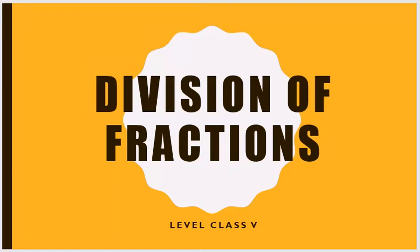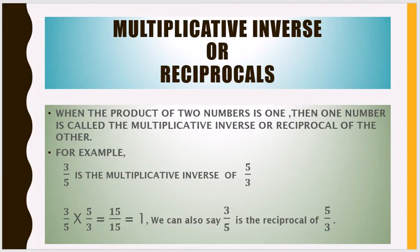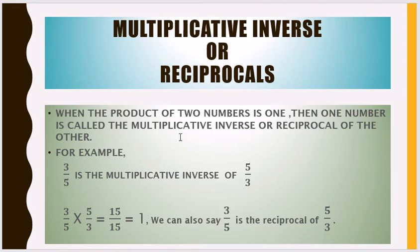Division of fractions. First you have to learn what a multiplicative inverse or reciprocal is. When the product of two numbers is one, then one number is called the multiplicative inverse or reciprocal of the other. If we multiply two numbers and the product is one, then one number is called the reciprocal or multiplicative inverse of the other.